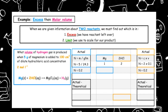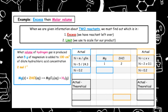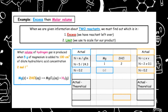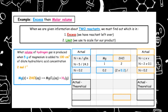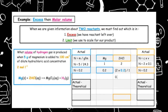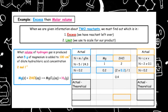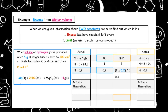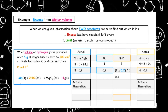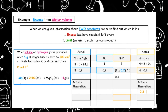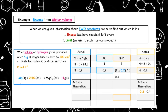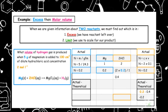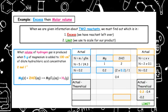We then scale over by placing the actual number of moles of magnesium underneath the mole ratio and cross-multiplying: 2 times 0.2 divided by 1 gives 0.4. To determine which is limiting or excess, we take the actual number of moles minus the theoretical. The actual moles of hydrochloric acid we had was 0.2, minus the 0.4, which gives a value of negative 0.2. Because we have a negative number, this must be our limiting reagent.